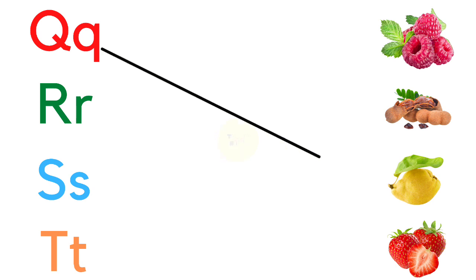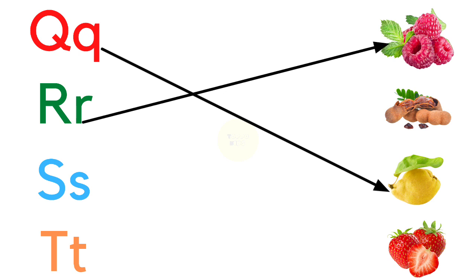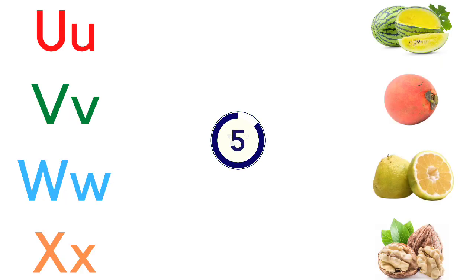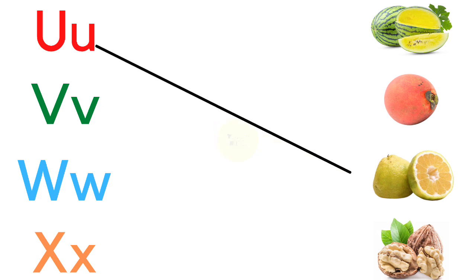Q for quince, R for raspberry, S for strawberry, T for turmeric rind, U for ugly fruit.